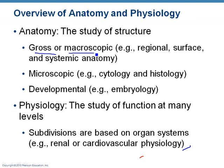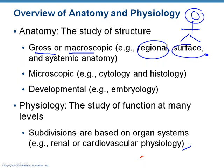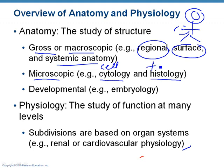We can talk about gross anatomy or microscopic anatomy. We can talk about regional anatomy — like the head, which we call cephalic. We may talk about a surface, like the integumentary system or the skin. We may talk about systemic anatomy, like cardiovascular, respiratory, or renal anatomy. We may talk about microscopic anatomy — cytology, which means cell anatomy, or histology, the study of tissues.